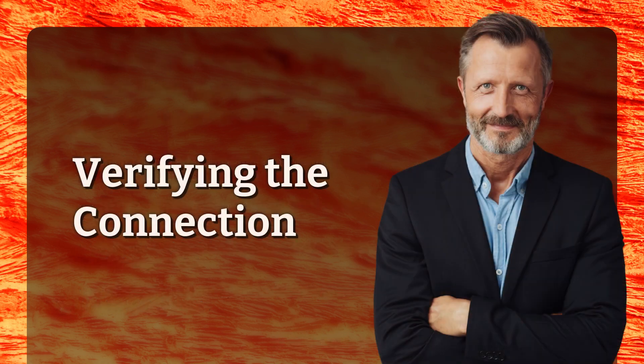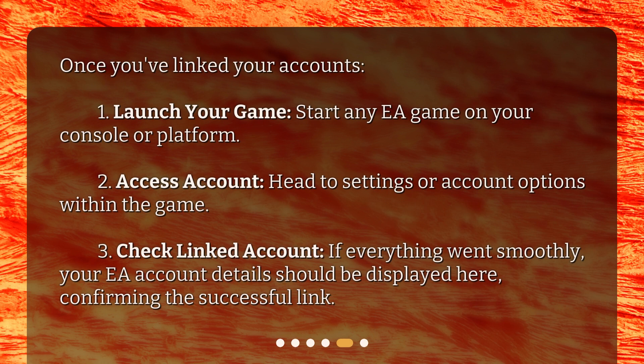Verifying the connection. Once you've linked your accounts: 1. Launch your game — start any EA game on your console or platform. 2. Access Account — head to Settings or Account Options within the game. 3. Check Linked Account — if everything went smoothly, your EA account details should be displayed here, confirming the successful link.